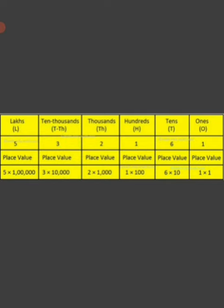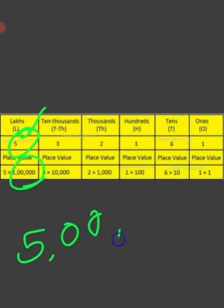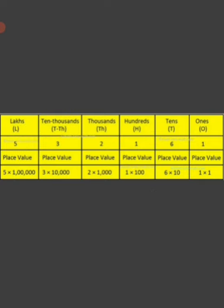After that, if we add one more zero to 10,000, it becomes lakh. So if the number 5 is given at the lakh's position, 5 has to be multiplied by 1 lakh. The value is 5 lakh. Lakh is a 6-digit number, and 1 lakh is the smallest 6-digit number.